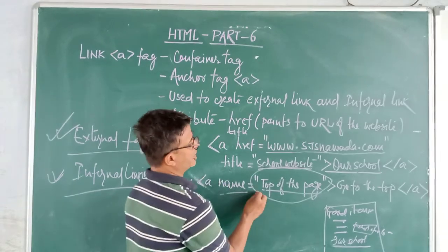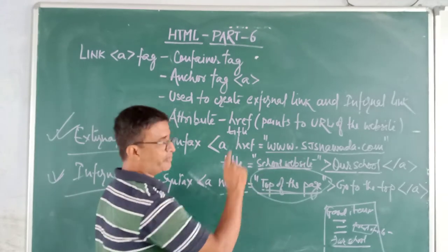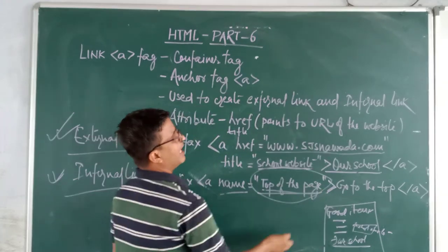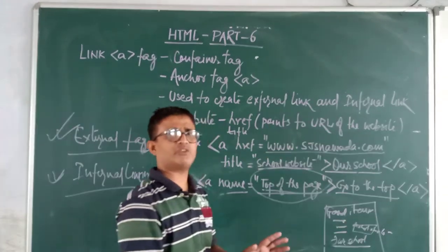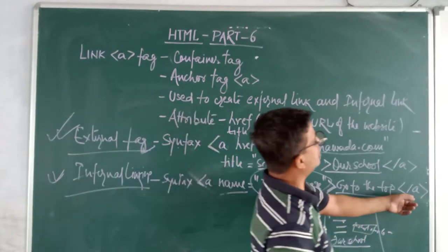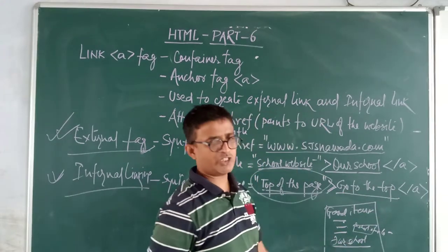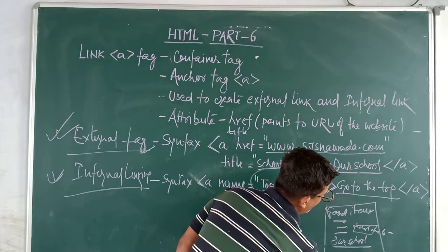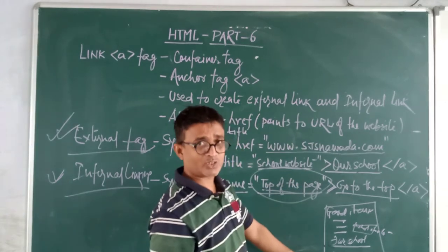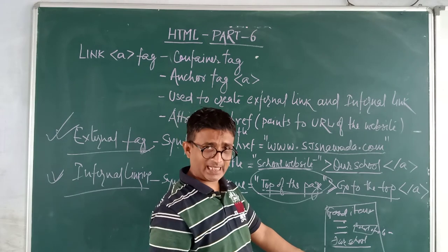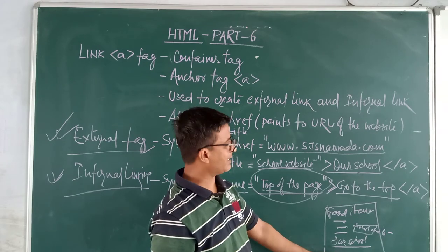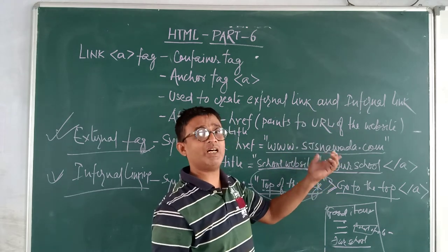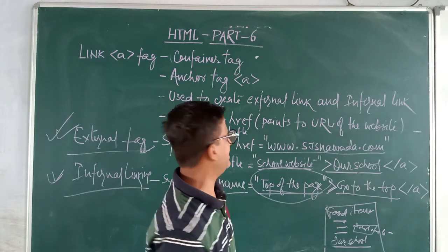You write the anchor with the name attribute pointing to the top of the page, then close the anchor, and at the bottom you write 'Go to the Top' and close the anchor tag. When you scroll down your website and find the 'Go to the Top' link, clicking it will take your page back to the top of that particular webpage.